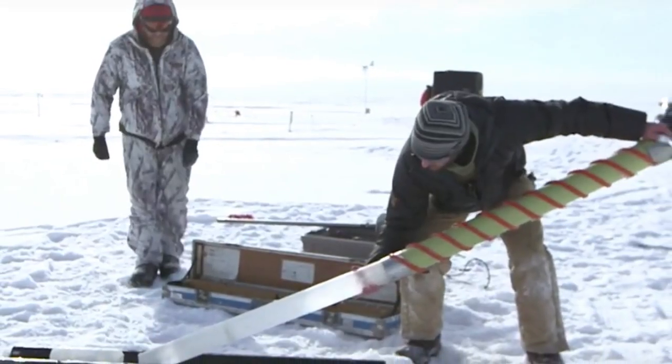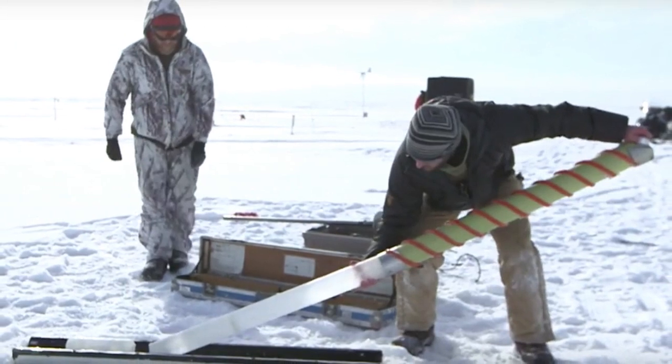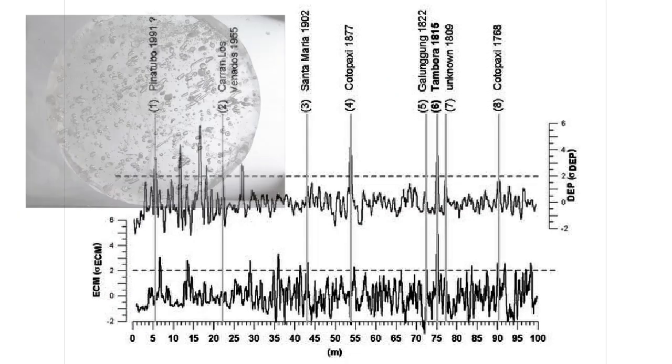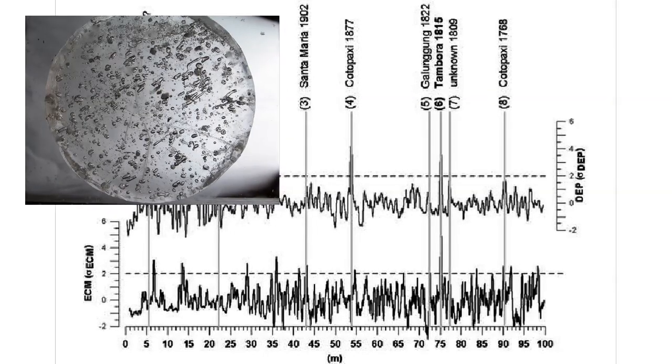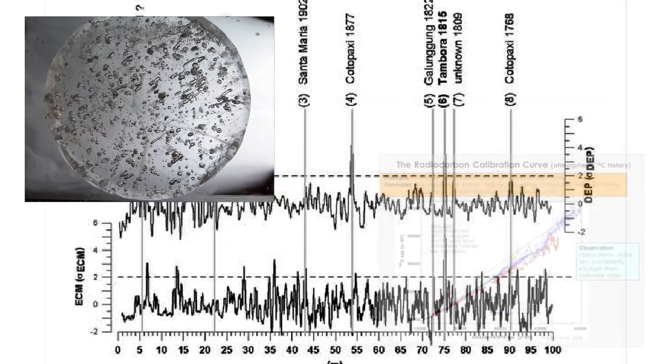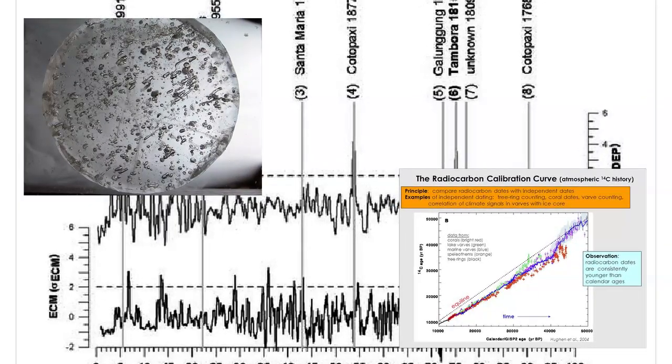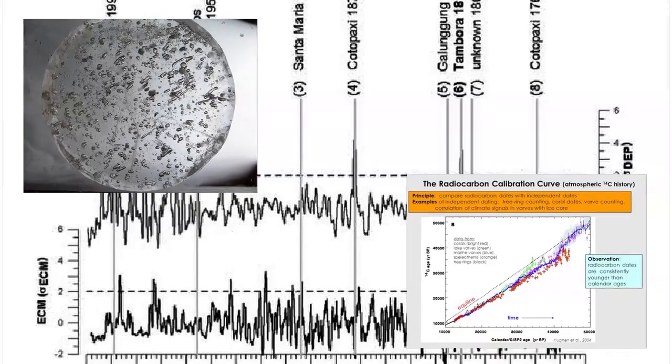Dating ice cores is not just a matter of counting rings. Cross-checking methods include tests for electrical conductivity and measurements for inclusion of gases, particles, radionuclides, and various molecules. Radiocarbon dating can also be used on the entrapped carbon dioxide, so there are many ways to cross-reference dating for ice cores.